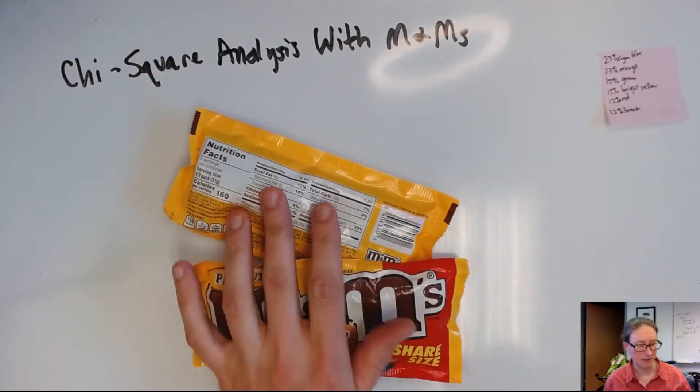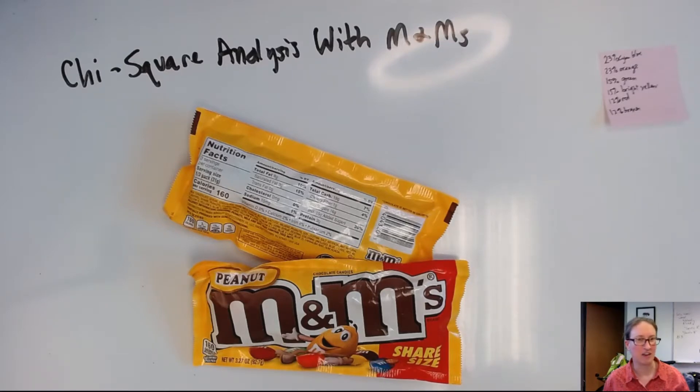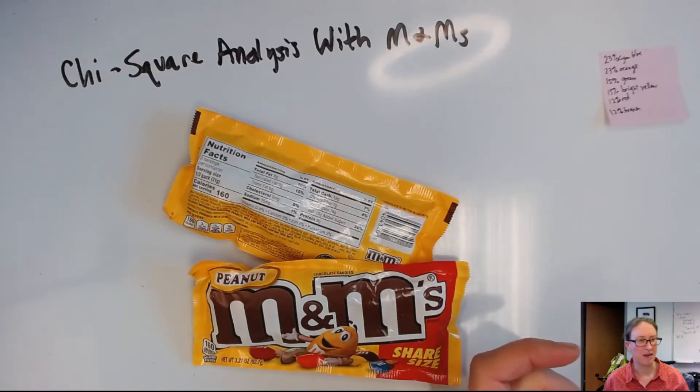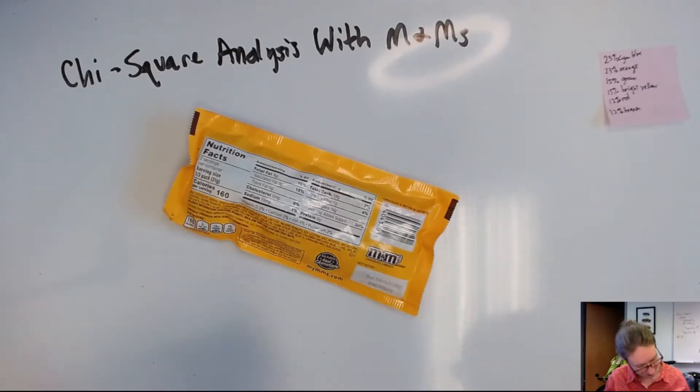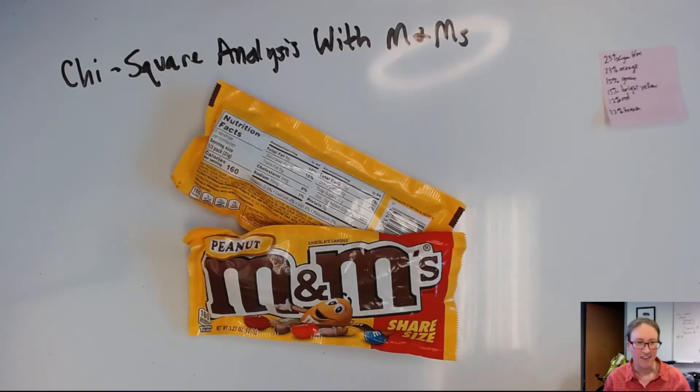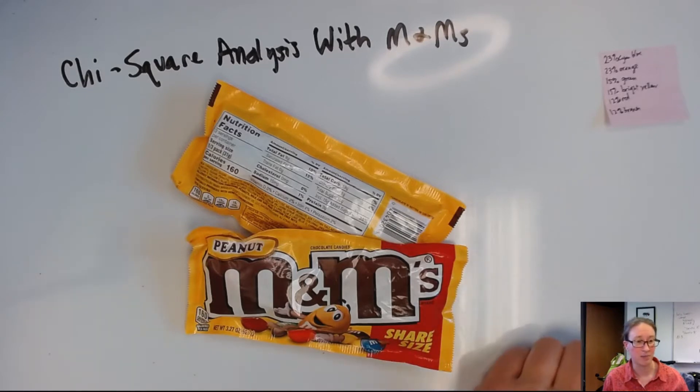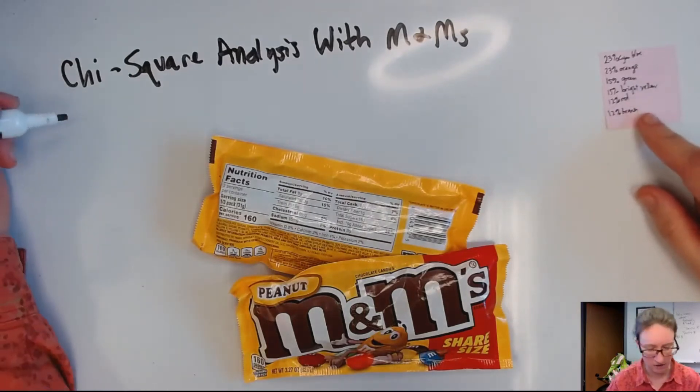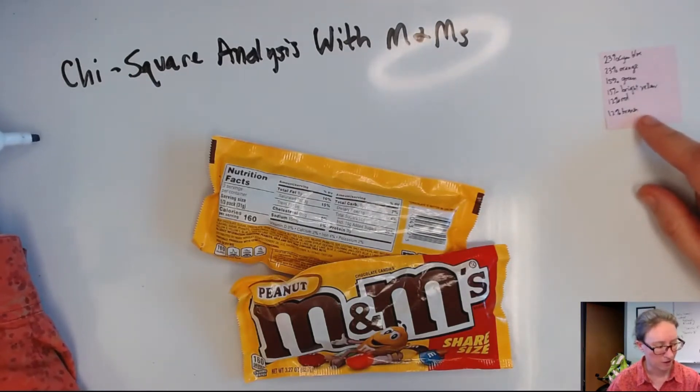So what I have here is a couple of bags of peanut M&Ms, which I find pretty delicious. And if you open up a bag of M&Ms, you notice that there are different colors of M&Ms inside. The Mars company guarantees that when you open up one of these bags of M&Ms, you are not going to get 100% orange or yellow M&Ms. You're going to get a mixture of colors. And they actually have a factory standard for the mixture of colors that you expect to get for those M&Ms. And so I have them on a little post-it note here. I'll just write them out in larger lettering over here.